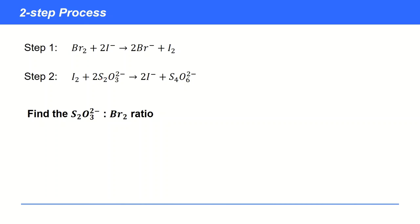Typically we have a standard solution of thiosulfate, so we know the concentration of that, and we can therefore know from the titer value — we can work out the number of moles of it. We're trying to link that to the number of moles of bromine. Let's say we're trying to find the concentration of a solution of bromine. A key step is to find the ratio of moles between thiosulfate and bromine, but they're not in the same equation. So how are we going to go about that?